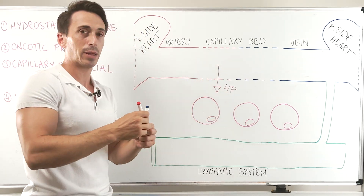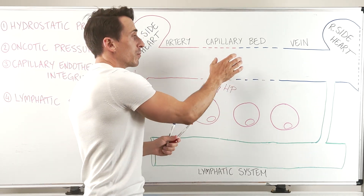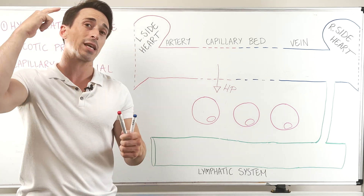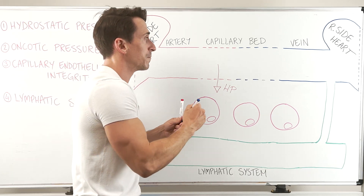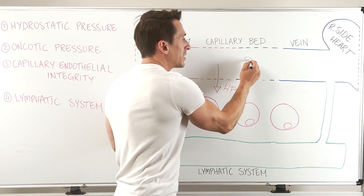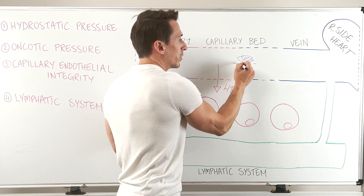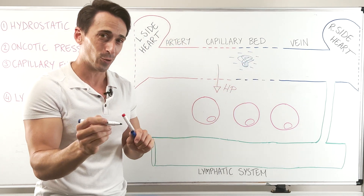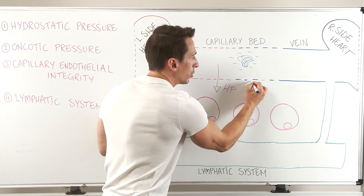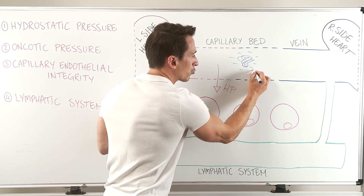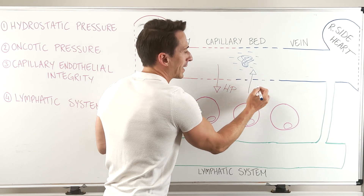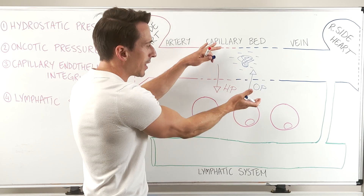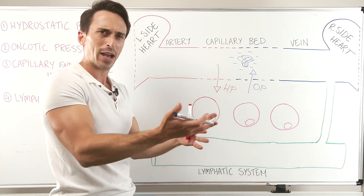Not everything leaves the capillary bed. Some things remain inside because they're too big — red blood cells, white blood cells, and proteins. Proteins have a negative charge associated with them, which means water is attracted to them. So we also have an inward pulling force dragging fluid back in. This is called the oncotic pressure, and you can see they balance each other out.